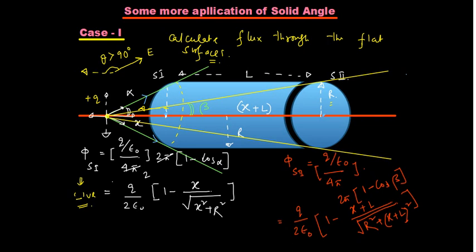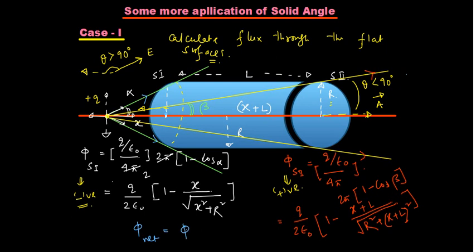Here the electric field direction and the area vector for S2 are in the same general direction, so the angle θ between them is acute (less than 90°) and cos θ is positive — this flux is positive. If they ask for the net flux through both flat surfaces, phi_net = phi_S2 − phi_S1, because one flux is negative and the other is positive.